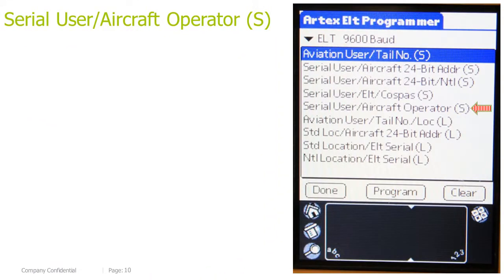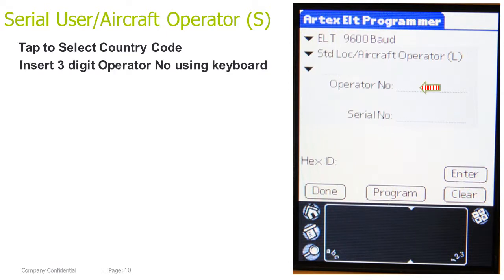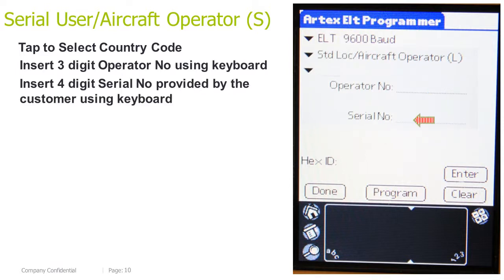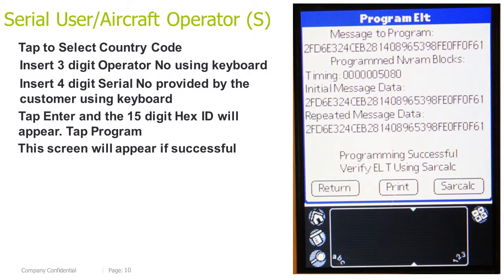Serial User, Aircraft Operator Short. Tap to select the country code. Enter the 3-digit operator code provided by the customer using the keyboard, then insert the 4-digit serial number provided by the customer using the keyboard. Tap Enter and the 15-digit HEX ID will appear, then tap Program. This screen will appear if successful.